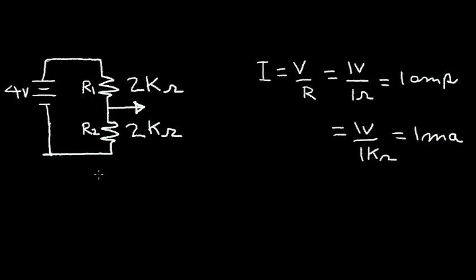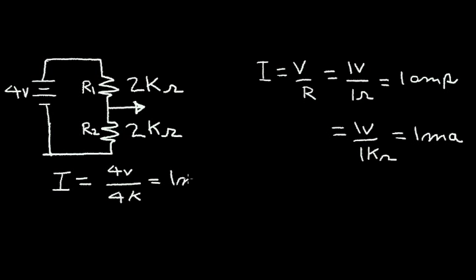Let's ask ourselves what is the voltage between the two resistors at this point. We know from previous videos that resistors in series add, so the total equivalent resistance of R1 and R2 is the sum of the 2kΩ resistor and the other 2kΩ resistor, giving us 4kΩ. We can calculate the current in this circuit: current equals voltage divided by resistance, so four volts divided by 4kΩ equals one milliamp of current flow.